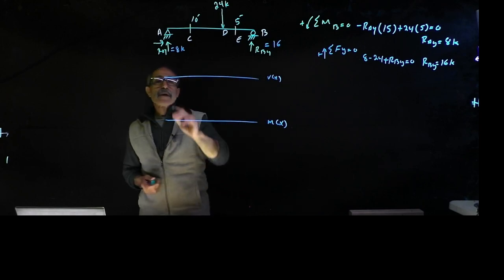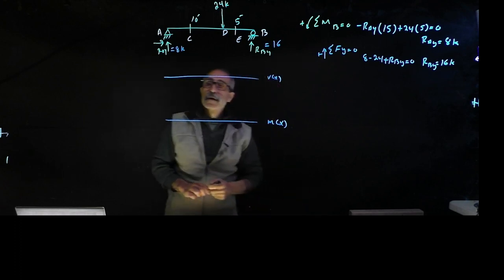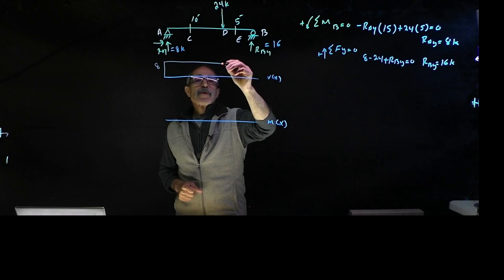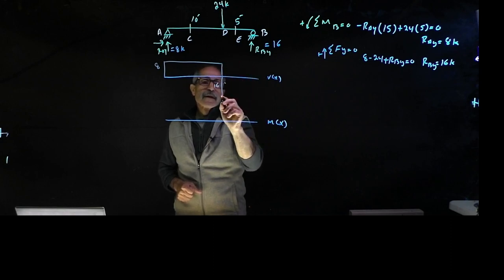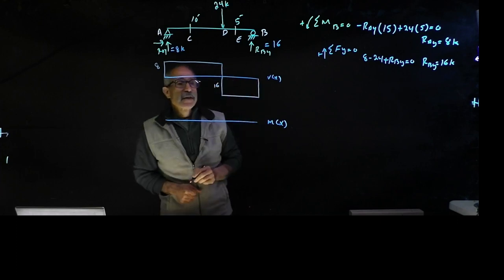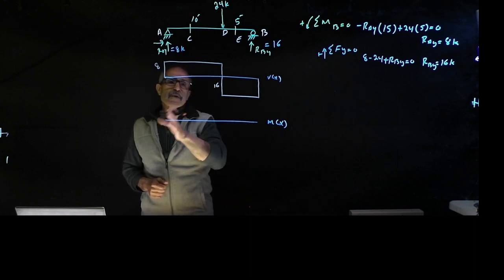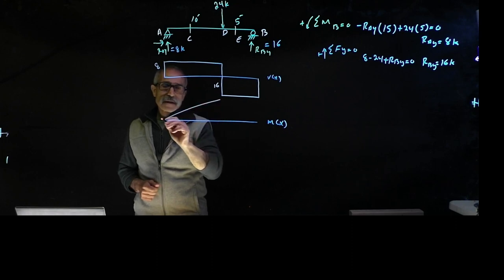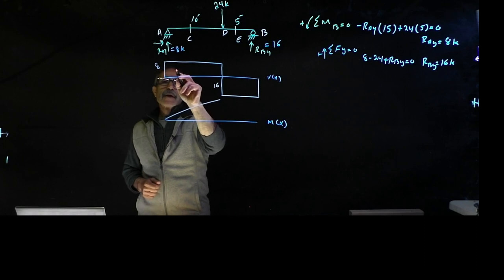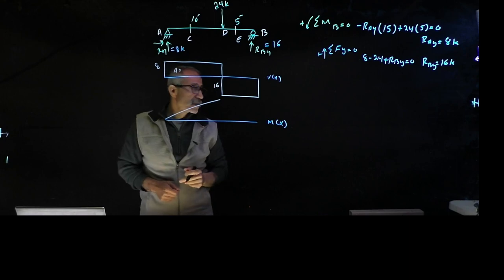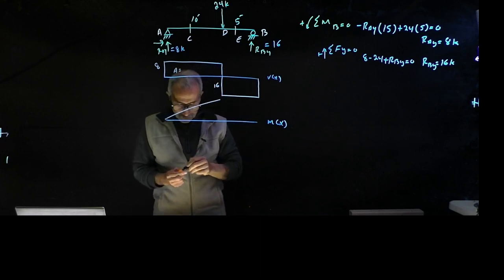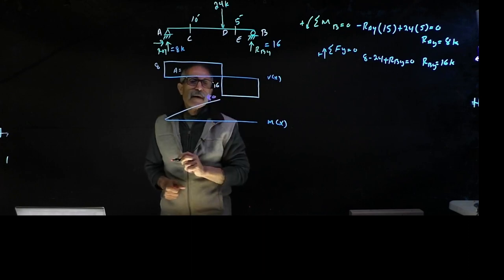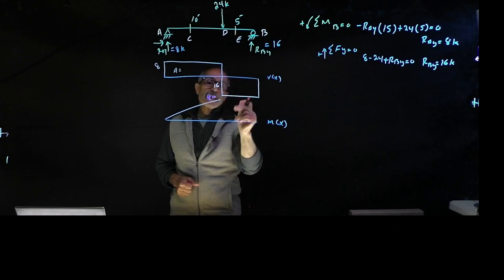For the shear diagram, I go up 8 at the pin support. Nothing happens until the 24 kip load where I drop 24 — there's 8 above and 16 below. Then nothing happens until the roller where I go up 16, bringing it back to zero. For the moment diagram, since shear is constant, it goes linear. The area of the first segment is 10 times 8 equals 80 kip-feet.